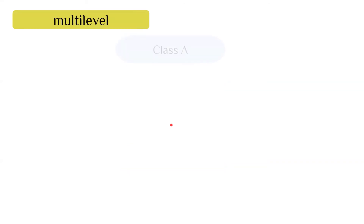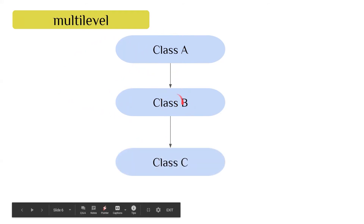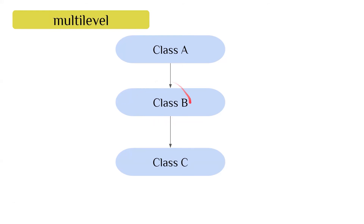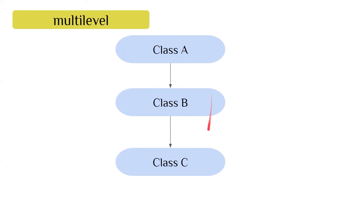In multi-level inheritance, class A is the parent of class B, and class B is the parent of class C. Class B can inherit all methods and variables from class A, and class C can inherit methods and variables from both class A and class B. We use multi-level inheritance when we want to provide more specification in the classes as we go down the levels.